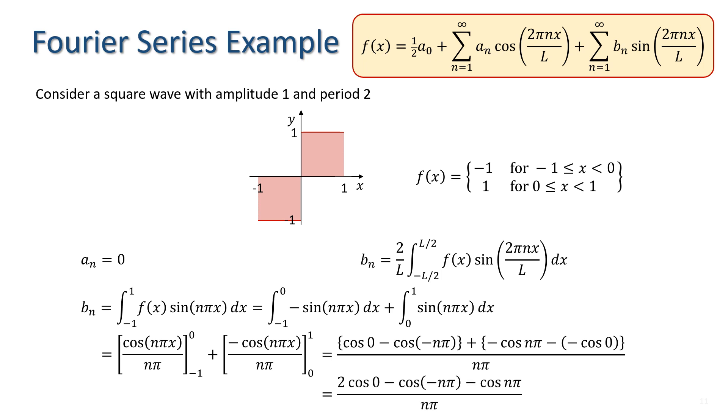Well, we know that cos of 0 equals 1 and we also know that cos of minus n pi always equals cos of n pi since cosine is an even function, thus b_n equals 2 minus 2 cos n pi over n pi. This will have different values depending on whether n is an odd or even number.